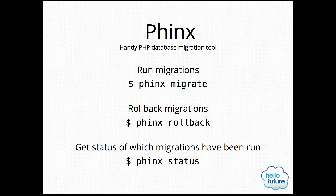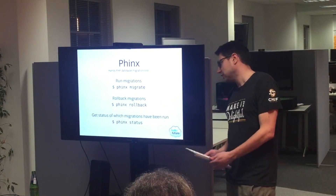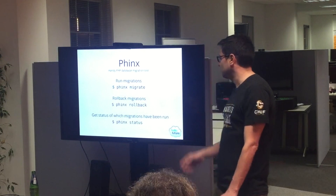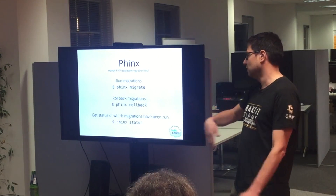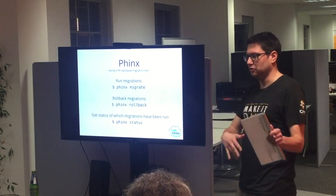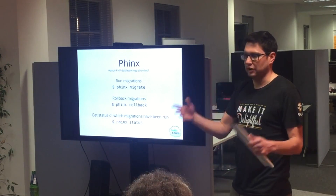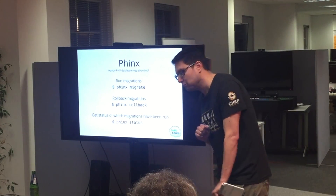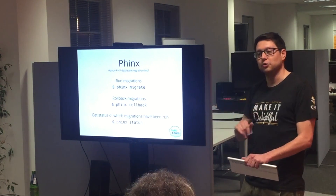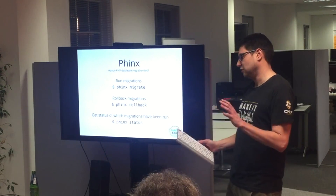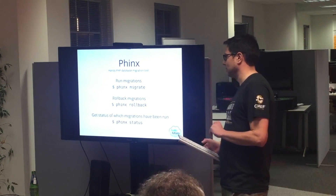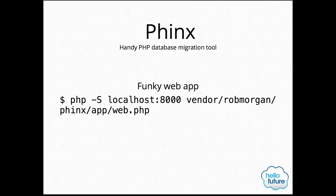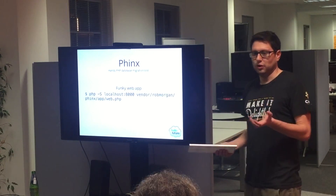You can migrate with the migrate command, roll back with the rollback command, and get a status of what's happened with the status command — quite straightforward. What Phinx does is store the migrations that have run in the database, so when you're deploying across multiple nodes you can run migrate and if it's already happened it won't happen again. You can roll back, and it won't roll back again if already done — but be careful, it will keep rolling back, so specify where you want to roll back to. There's also a little web app you can use, though not sure why you'd want to.